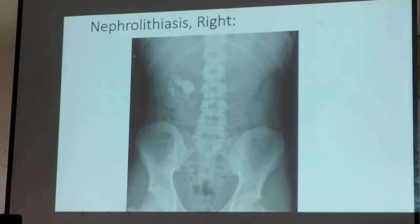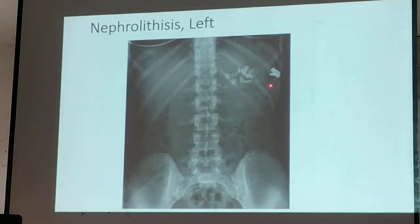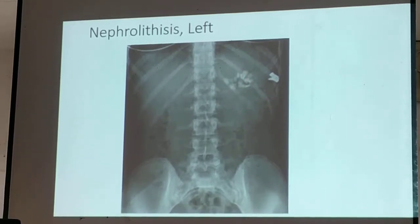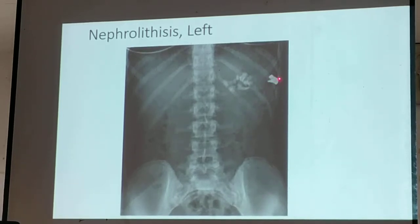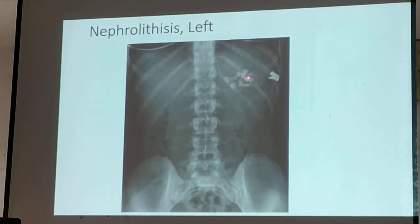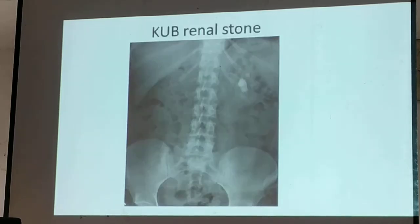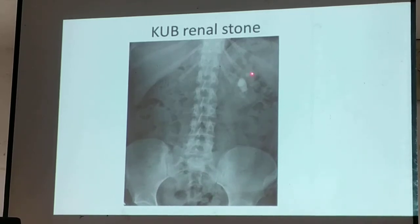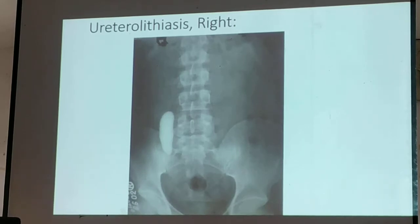This is the right kidney. There are at least two stones — this is the bigger stone, and there is another suspicious stone on the left kidney. This is very obvious: this is not a renal stone. Instead, this is your ureteral stone on the right.